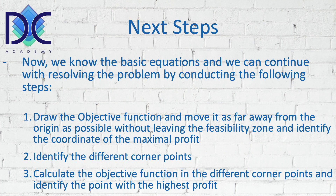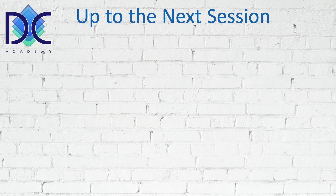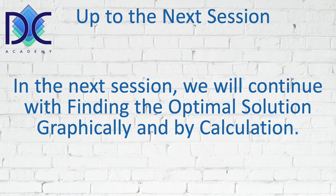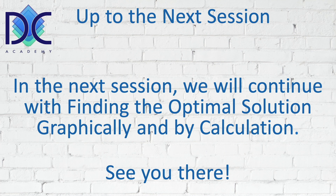In the next steps we will draw the objective function and move parallel lines to it as far from the origin as possible. We can then identify the different corner points, calculate them, and evaluate the objective function at each corner point to identify the point with the highest profit. In the next session we will find the optimal solution using both a graphical method and calculations. You're doing a great job and I look forward to seeing you in the next video — thank you and bye bye.